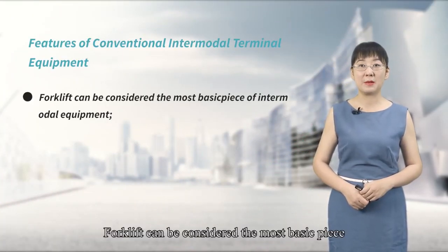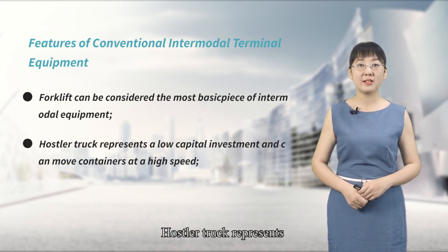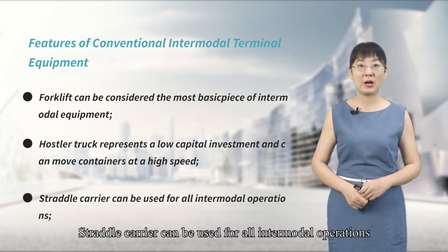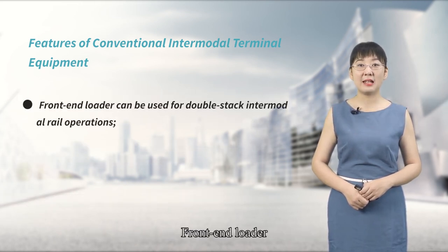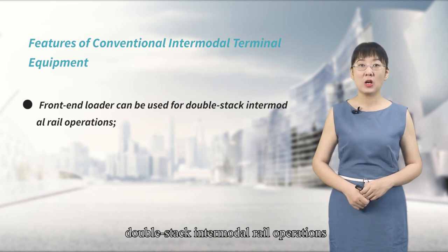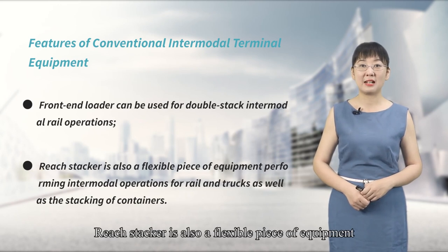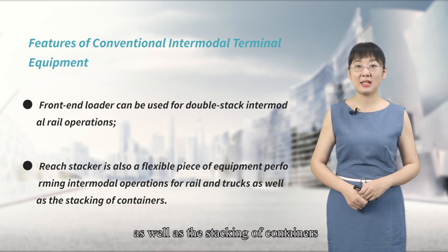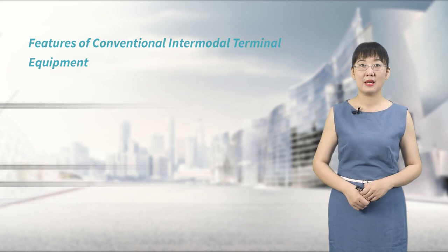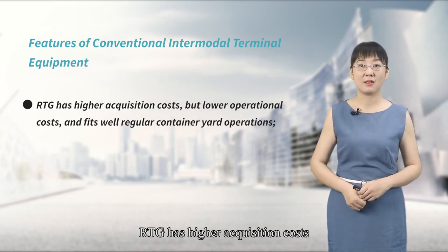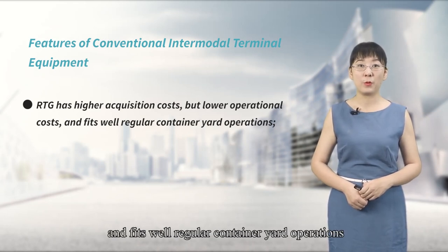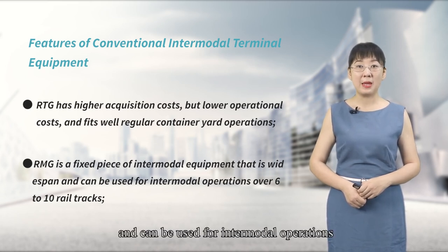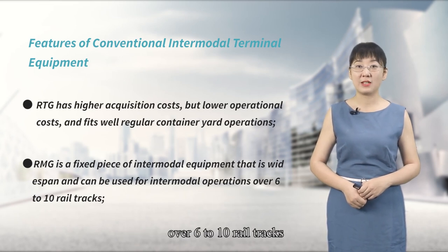A forklift can be considered the most basic piece of intermodal equipment. A straddle truck presents a low capital investment and can move a container at high speed. A straddle carrier can be used for all intermodal operations. A front-end loader can be used for double-stack intermodal operations. A reach stacker is also a flexible piece of equipment performing intermodal operations for rail and trucks as well as the stacking of containers. An RTG has a higher acquisition cost but lower operational cost and fits well in regular container yard operations. An RMG is a fixed piece of intermodal equipment with a wide span and can be used for intermodal operations over 6 to 10 rail tracks.